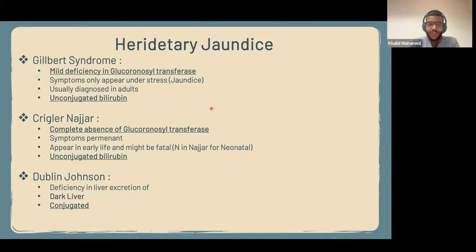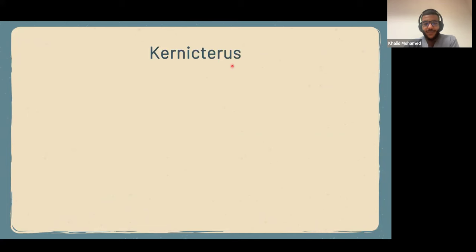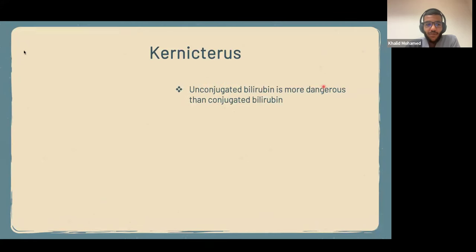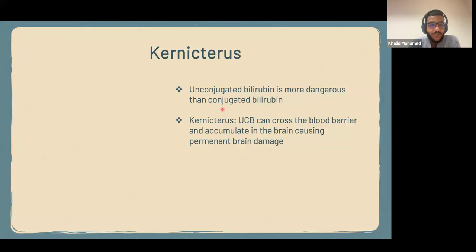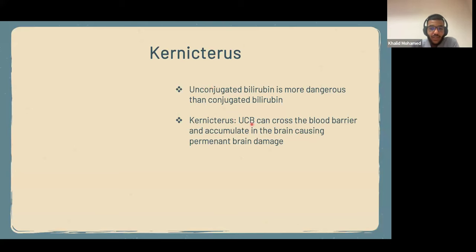Now, which is more dangerous — unconjugated or conjugated bilirubin? Unconjugated is more dangerous. Why? Because of a condition called kernicterus. Unconjugated bilirubin can cross the blood-brain barrier, whereas conjugated cannot. Once it crosses the blood-brain barrier, it can accumulate in the brain causing permanent brain damage. So this is why unconjugated bilirubin is much worse — conjugated bilirubin can get excreted and won't deposit dangerously, but unconjugated builds up in the brain.